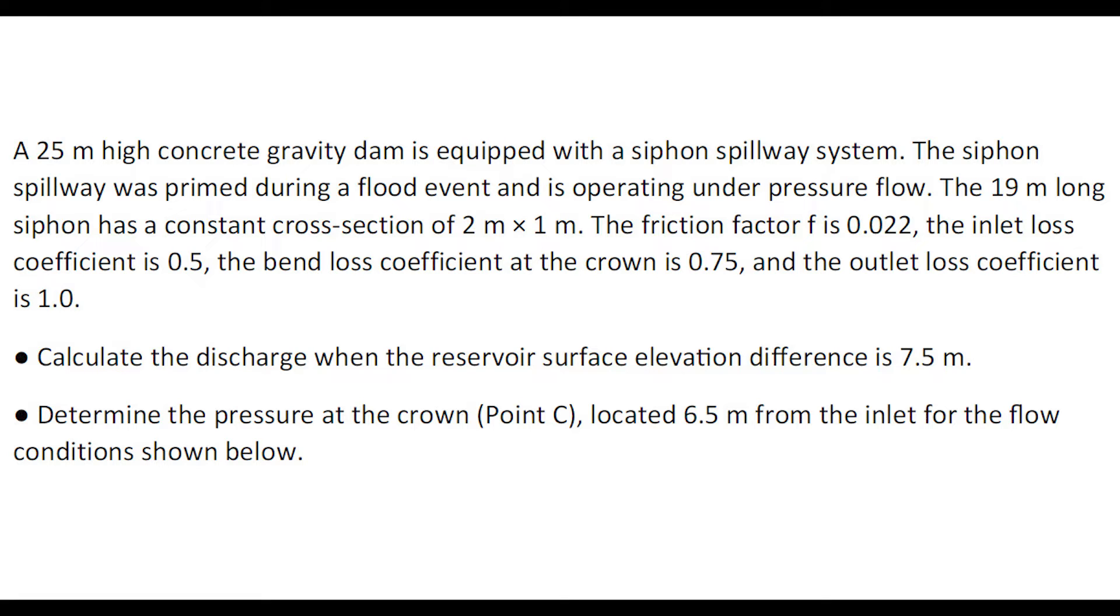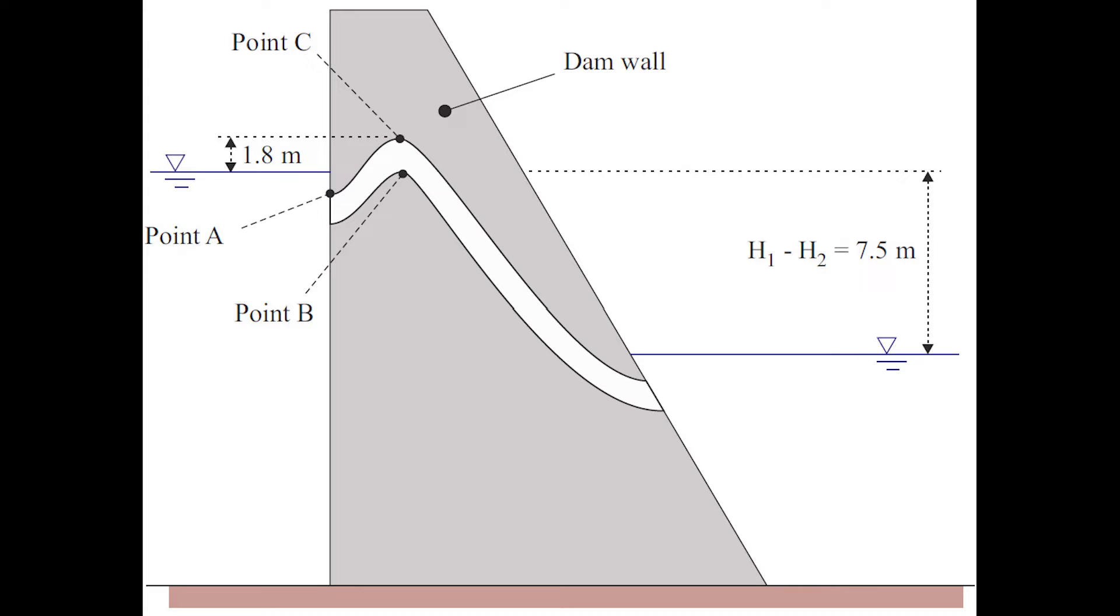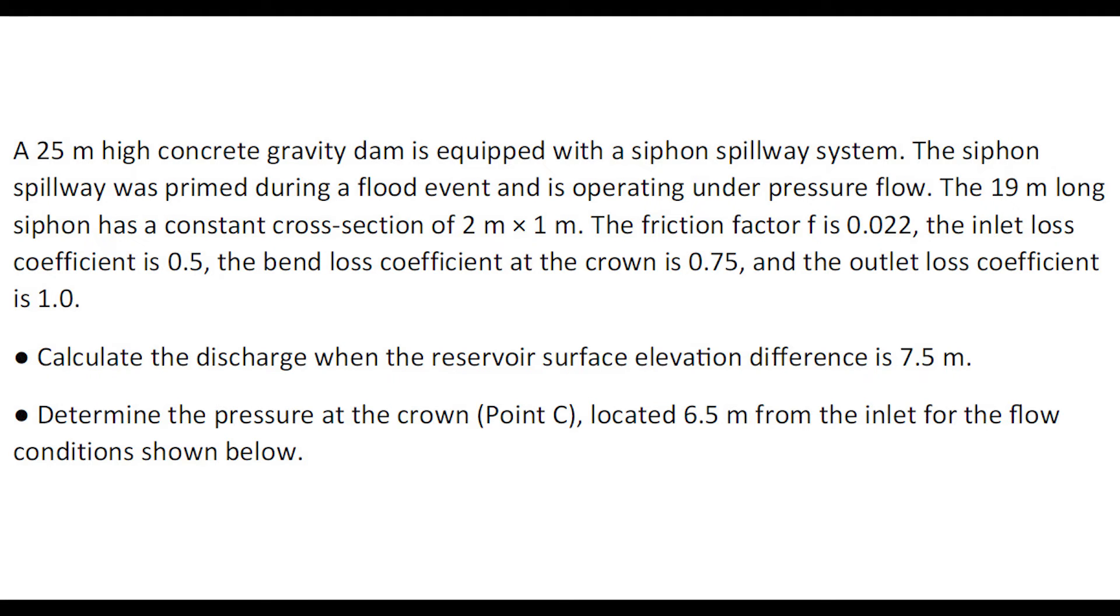Let us consider a 25 meter high concrete gravity dam equipped with a siphon spillway. The siphon spillway is primed during a flood event and is operating under pressure flow. The 19 meter long siphon has a constant cross-section of 2 meter by 1 meter. The friction factor is assumed to be 0.022, the inlet loss coefficient 0.5, the bend loss coefficient at the crown about 0.75, and the outlet loss coefficient is 1.